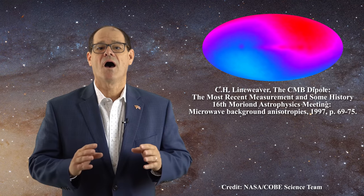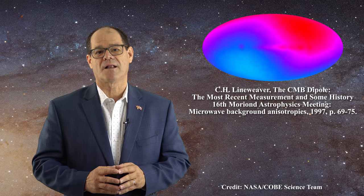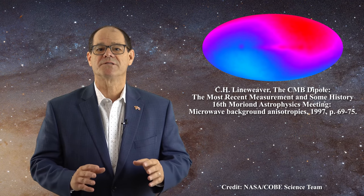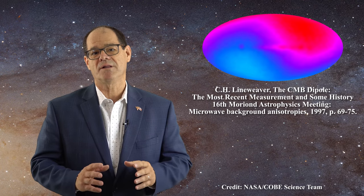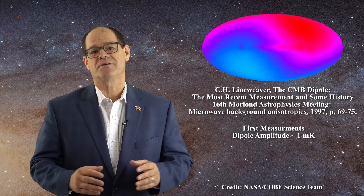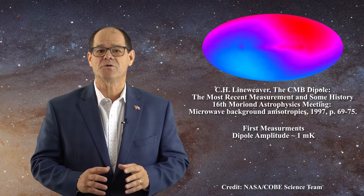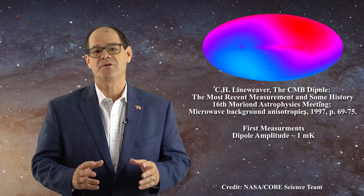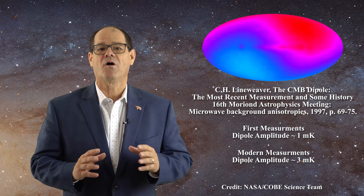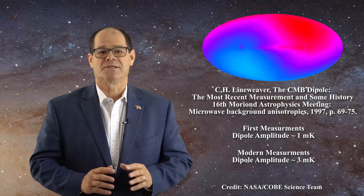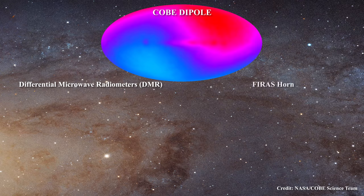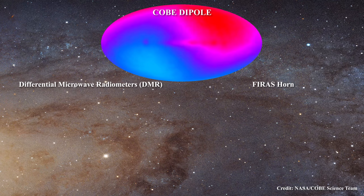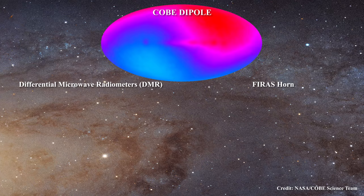Charles Lineweaver has published a short history of the dipole measurement up to the time of the COBE satellite, which is linked below. The first measurements of the dipole began in the 1960s and reported an amplitude of about 1 mK. Over the course of the next 30 years, measurements within the Earth's orbit slowly saw the value rise to about 3 mK. The direction of the dipole also became firmly established. Both the differential microwave radiometers and the FIRAS horn on the COBE satellite were able to measure the dipole with great precision and COBE reported this image for the dipole.